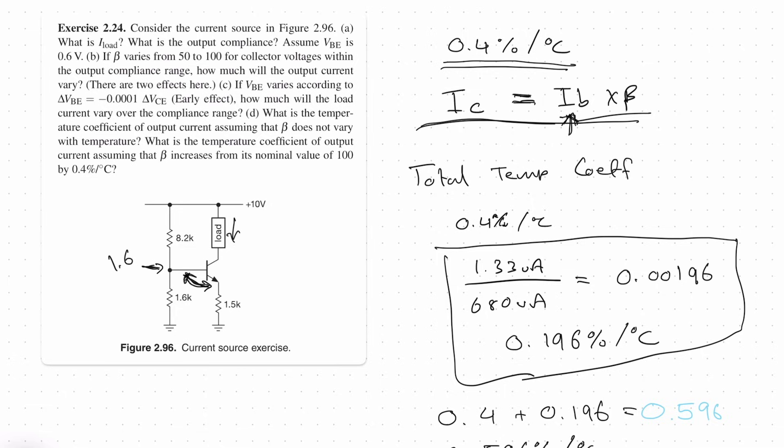And that wraps up the solution for question 2.24 from the art of electronics. As we've seen, the temperature can have a noticeable effect on the transistor circuit behavior and understanding these coefficients is vital for designing circuits that operate reliably over a range of temperatures. So thank you for watching today and I'll see you in the next video.